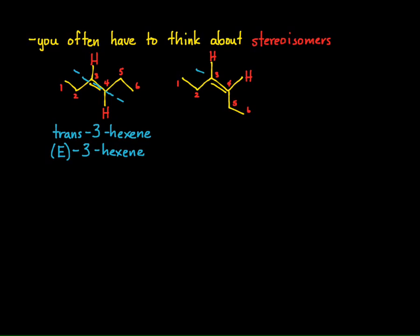And if I draw that imaginary plane on the stereoisomer on the right, I see that the two R groups are on the same side. So I get cis-3-hexene or Z-3-hexene.